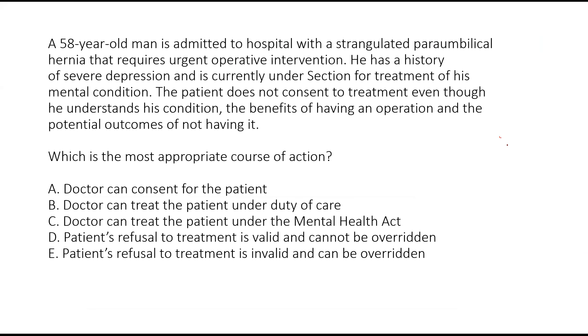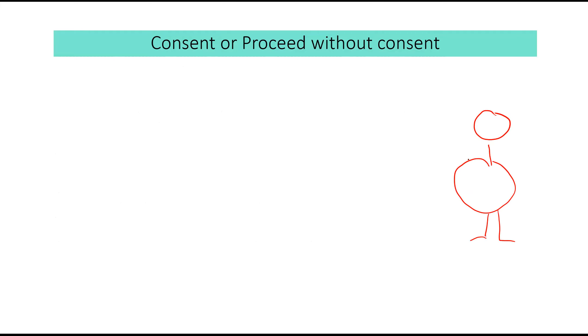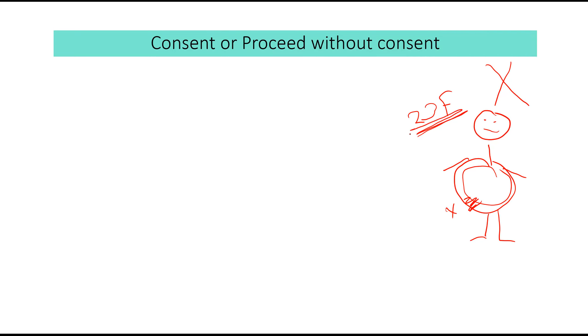Let me give examples that will come in your exam. Example one: a 23-year-old pregnant adult lady presents with acute appendicitis. You explain the full procedure and she refuses. Would you proceed? No — you will not proceed without consent, because an adult patient with capacity is responsible for her own life or death.